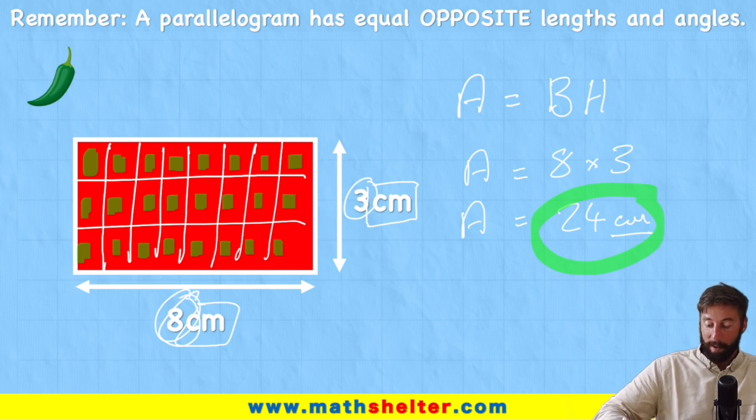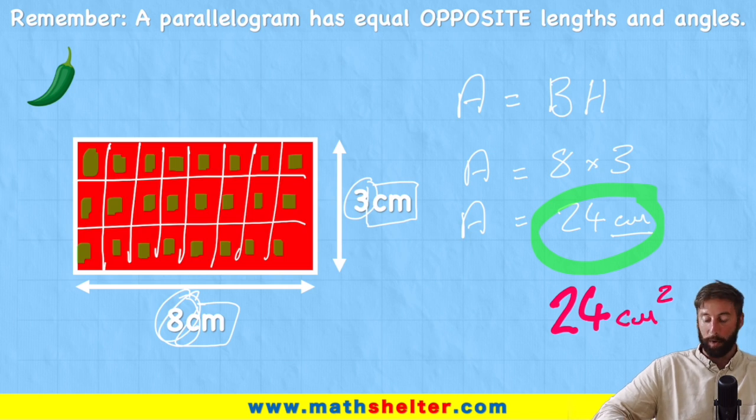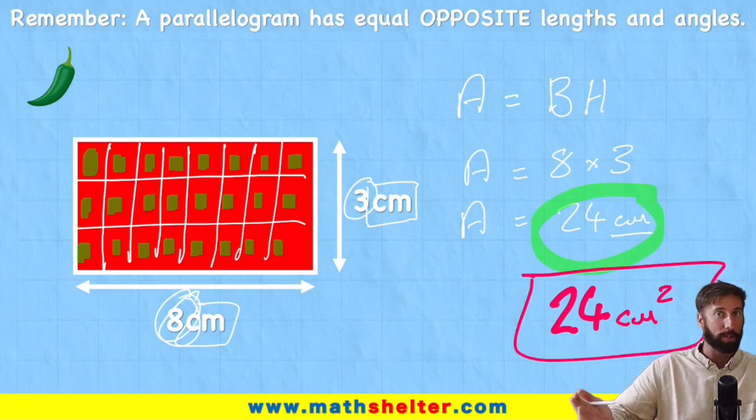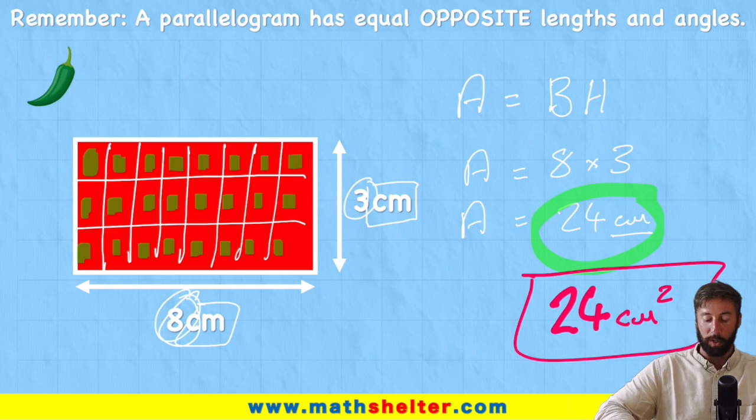So I should have 24 but what do I have? I have 24 centimeter squares. And that's why we use the measurement centimeter squared or meter squared or kilometer squared. But the squared part is because we're chopping it into literal squares.